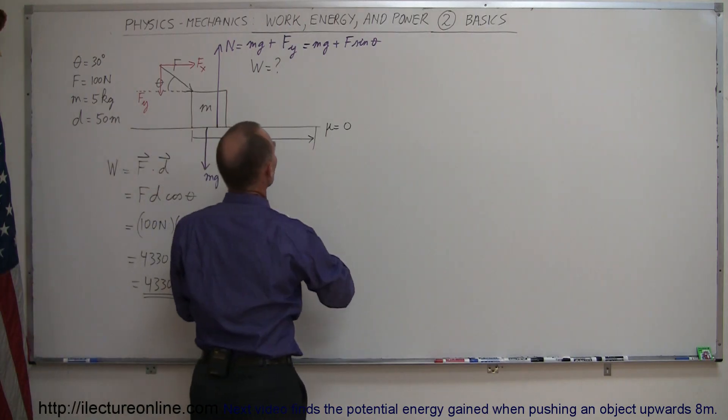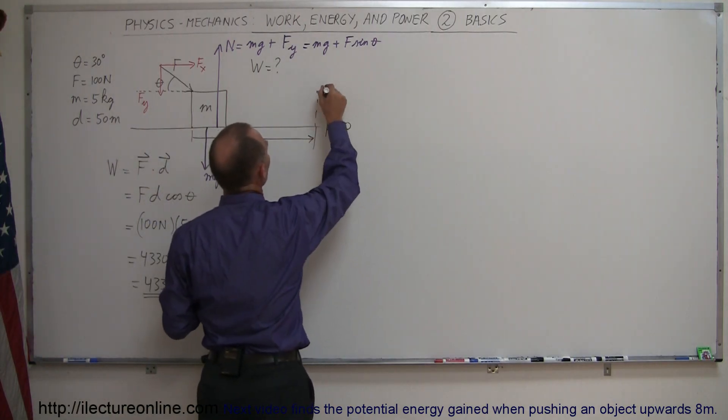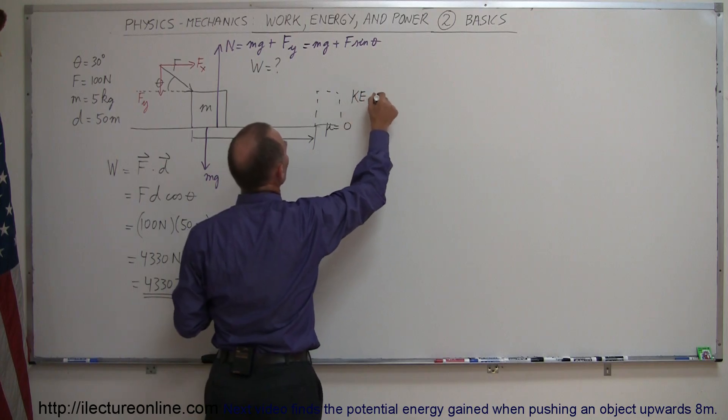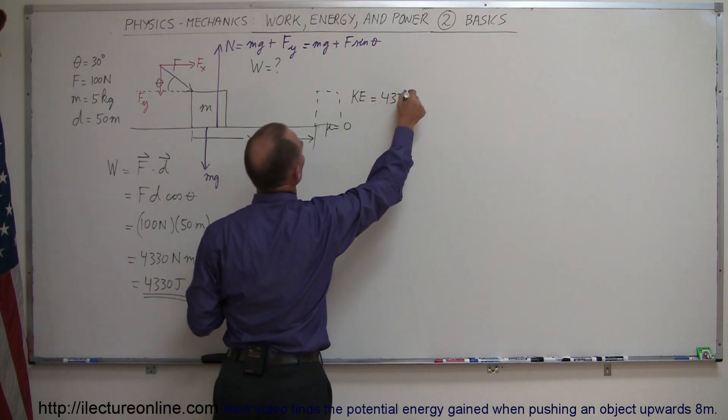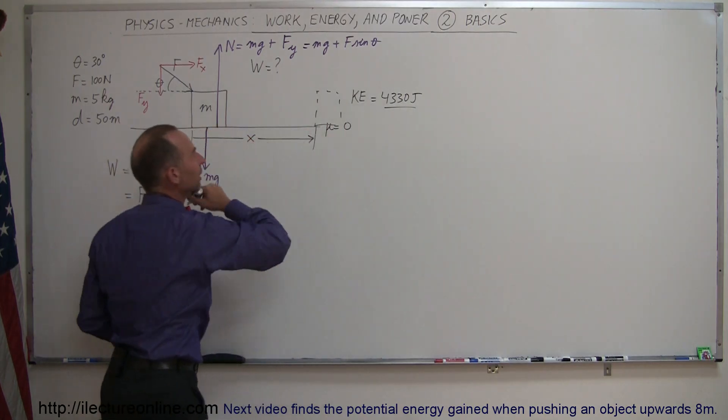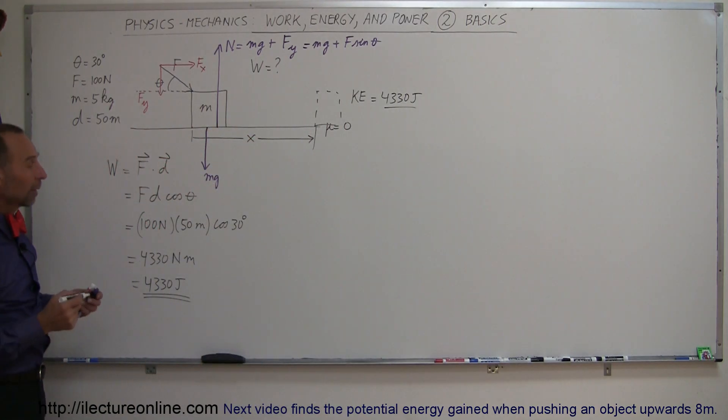So by the time the block gets over here, the block will now have, so the kinetic energy of the block, at this point, will be 4,330 joules, meaning all this work was converted to energy. None was lost by overcoming friction, and that's how you do that.